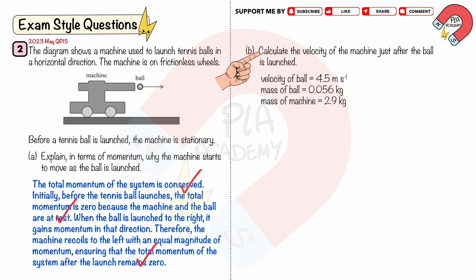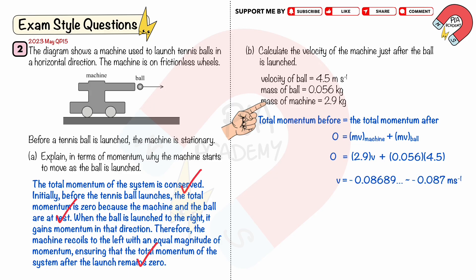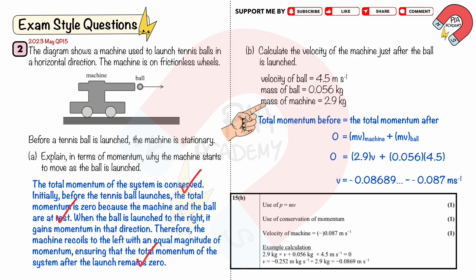Part B. Calculate the velocity of the machine just after the ball is launched. Velocity of ball equals 4.5 meters per second, mass of ball equals 0.056 kilograms, mass of machine equals 2.9 kilograms. Using the principle of conservation of momentum: total momentum before launching equals total momentum after launching. The total momentum before is zero. Therefore zero equals momentum of the machine plus momentum of the ball. The momentum of the machine is 2.9 times V, where V is the final velocity of the machine. The momentum of the ball is 0.056 times 4.5. We solve velocity V as negative 0.087 meters per second to two significant figures. The negative sign shows that the machine and the ball have opposite directions. You get 3 marks: use P equals MV, apply the principle of momentum, and give the correct working and answer.